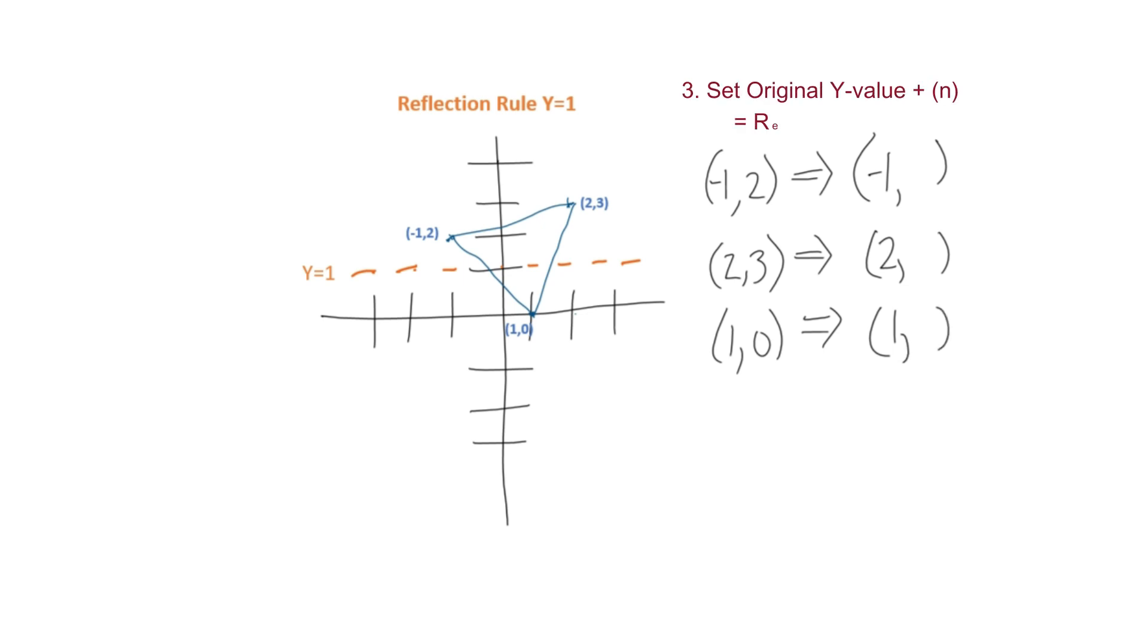Our next step is to set our original y values plus n equal to our reflection value of 1. So 2 plus n equals 1, 3 plus n equals 1, and 0 plus n equals 1.